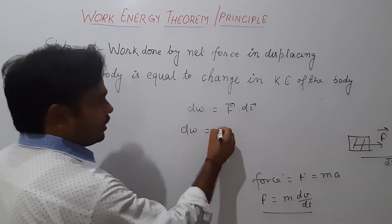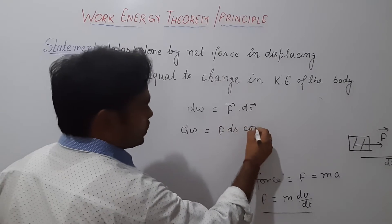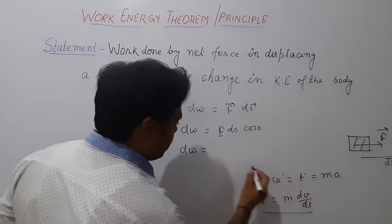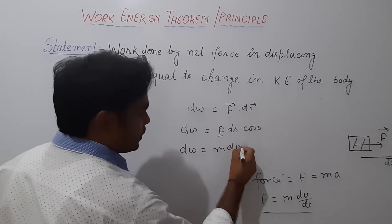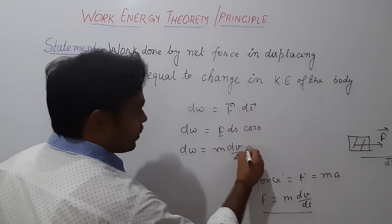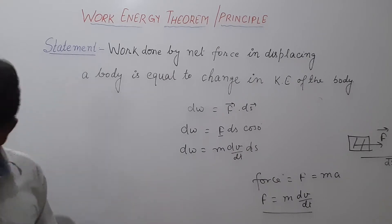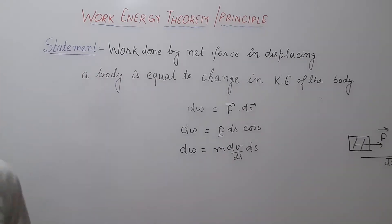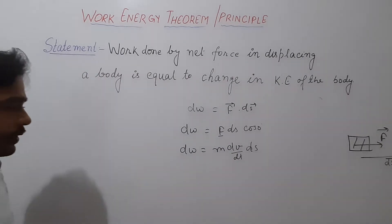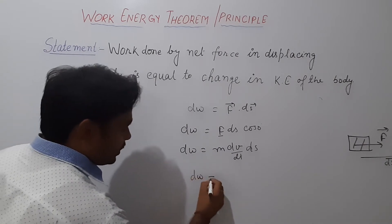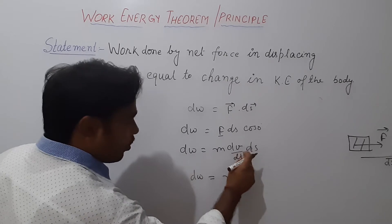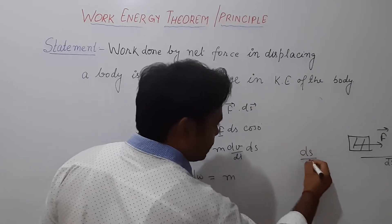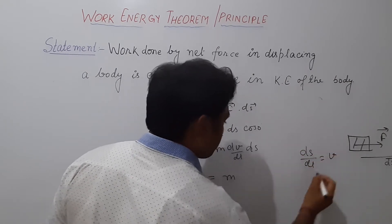Small work done dW, we can write it as F dot ds. Since force and displacement are taken in the same direction, we can write it as F times ds times cos(0°), and we know that cos(0°) is 1. So F equals M times dv/dt, and substituting, dW equals M times (dv/dt) times ds. Now if we calculate total work in changing the velocity of the body from U to V, we can write dW equals M times (dv/dt) times ds. We know that ds/dt, the rate of change of displacement, is velocity.